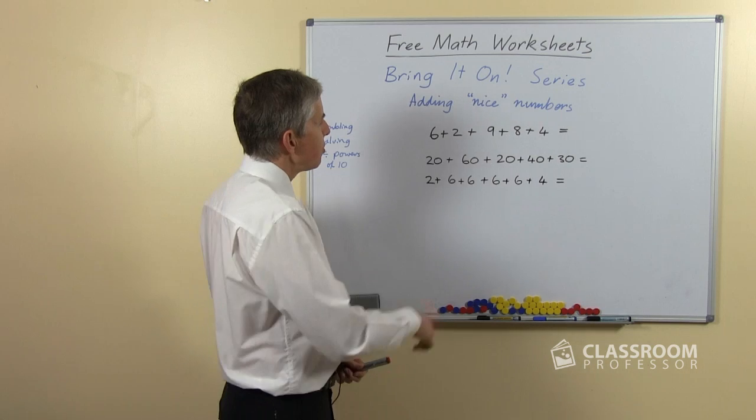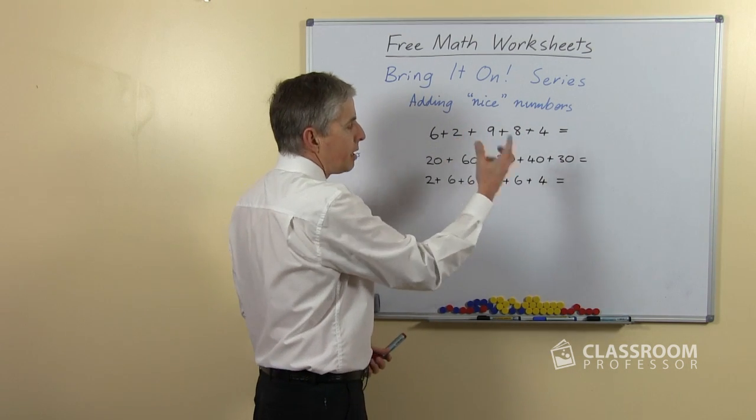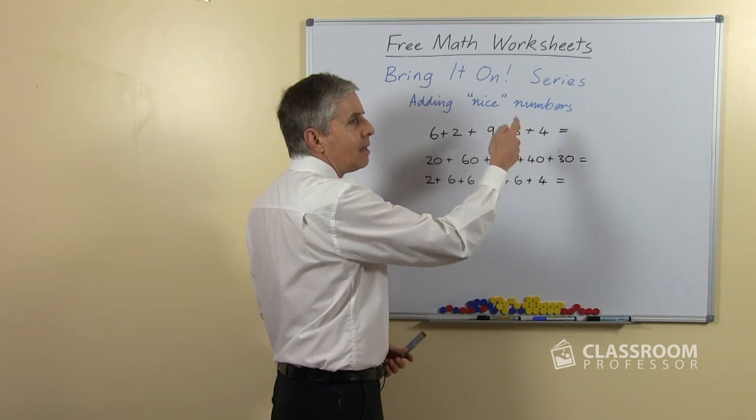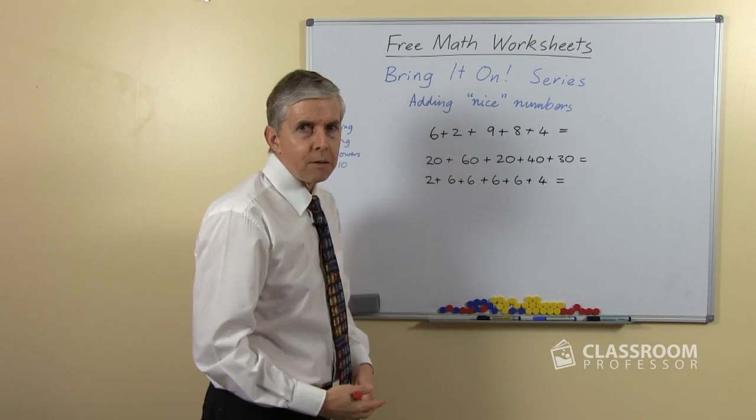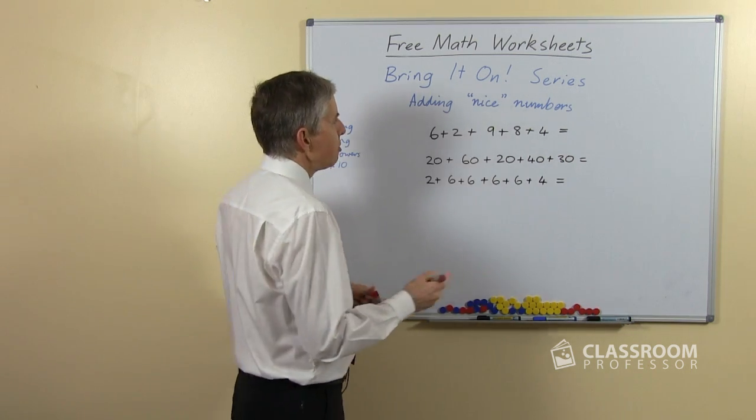But this is going to be difficult because we've got 6 and 2, that's an easy number fact, 8 plus 9 is 17, then there's another 8. We could do it that way, but you can see that there are some numbers there that make this a lot easier if we join them together.